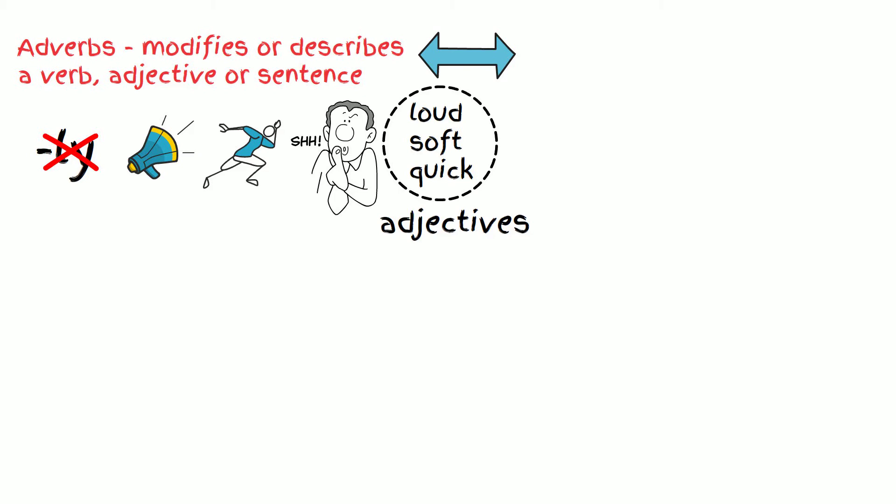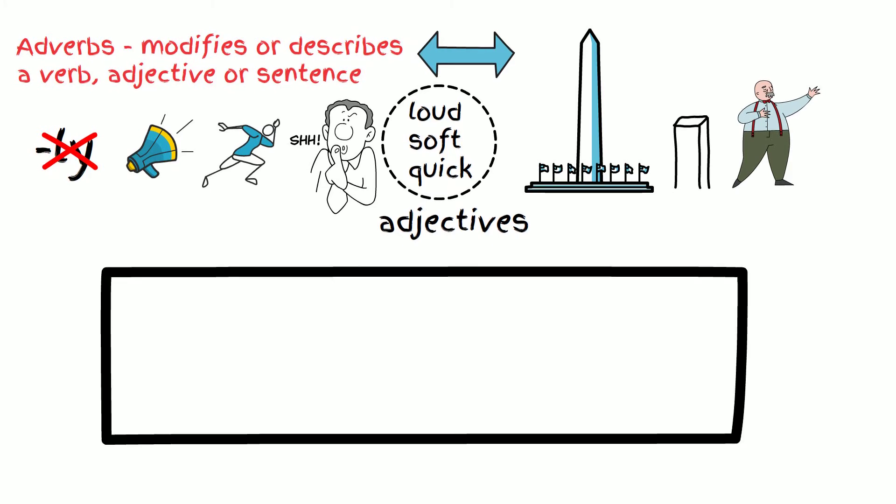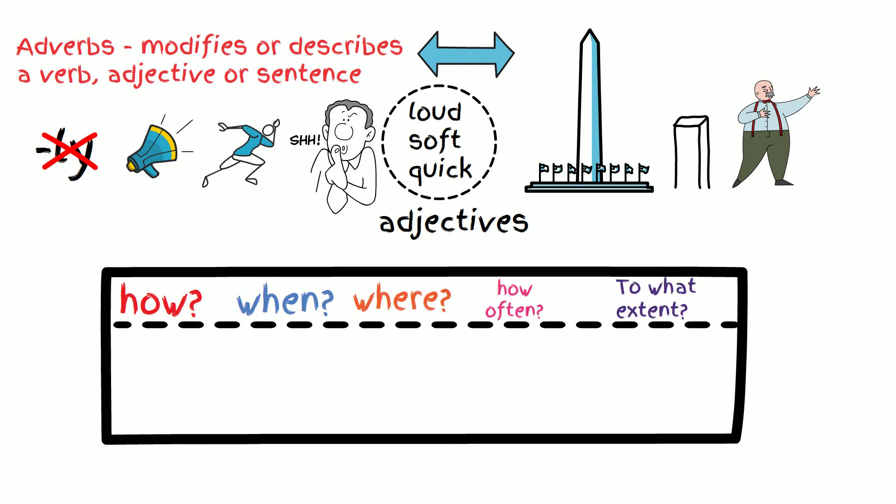More examples of adverbs include very tall, very short, and sings loudly. An adverb tells you more about a verb and an adjective by answering five questions: how, when, where, how often, and to what extent.